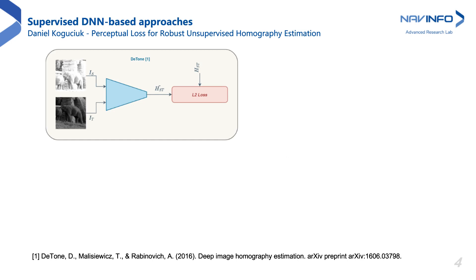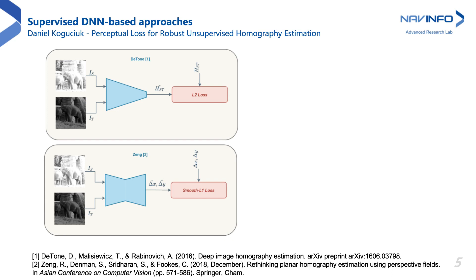Recently, with the advancement in deep neural networks, DeTone proposed a simple CNN architecture trained in an end-to-end fashion. The idea was to directly regress the parameters of a homography, and it achieved similar performance to traditional feature-based methods. A more effective approach is presented by Zeng, where the problem was formulated as per-pixel offset regression. However, supervised methods are often unlikely to be used in real-life scenarios, where ground-truth homography labeling is prohibitively expensive.